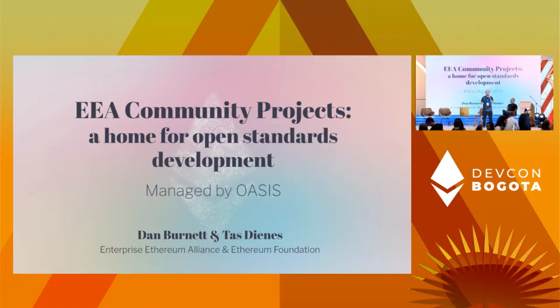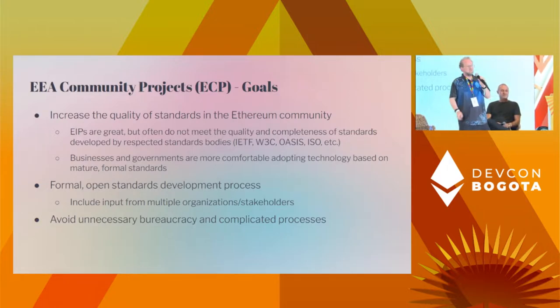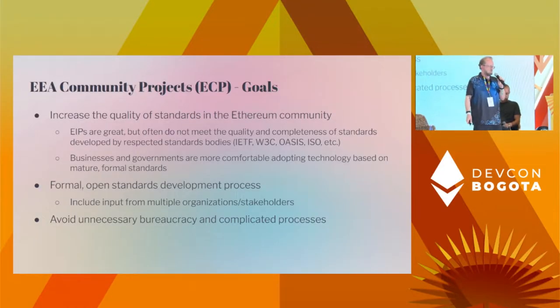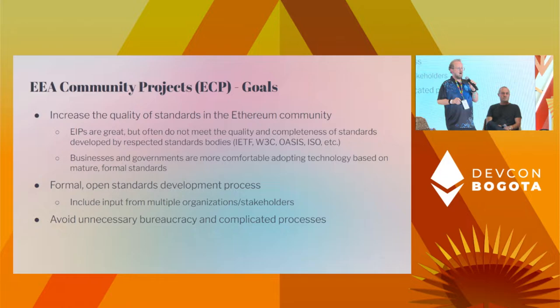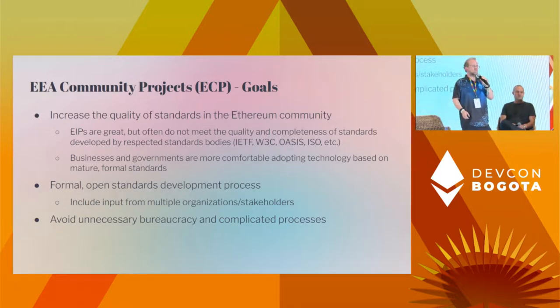I'm going to talk a little bit about the history, and then Taz will get into what we're doing today and what you can do through the community projects going forward. So when we created the community projects originally, our goal was to improve the quality of standards in the Ethereum community. EIPs are great and have moved the entire ecosystem forward, but they often don't meet the quality and completeness level that businesses would expect from traditional standards organizations such as IETF, W3C, OASIS, or ISO. Businesses and governments are a lot more comfortable adopting those kinds of technology standards than some of the ones they've seen from EIPs. So the goal was to see if there are projects that could benefit from this additional level of rigor.